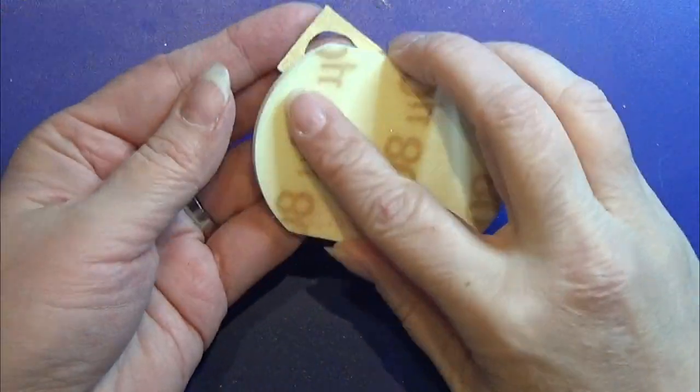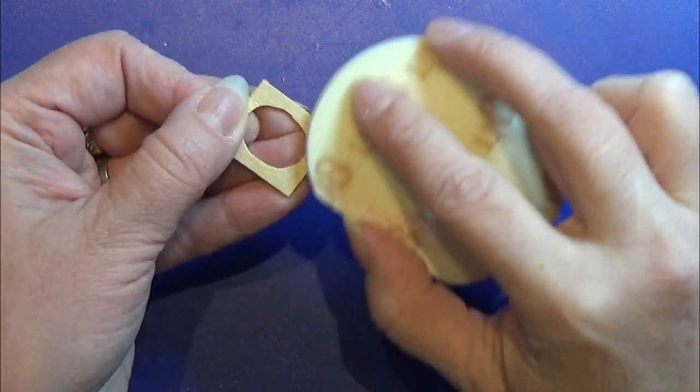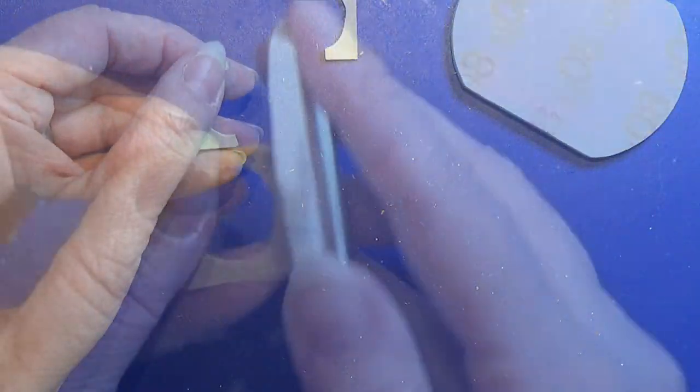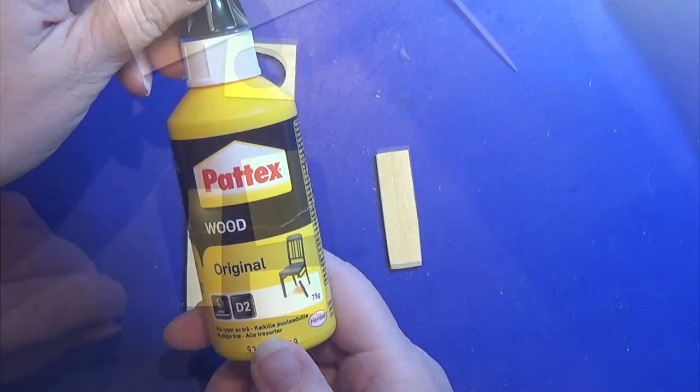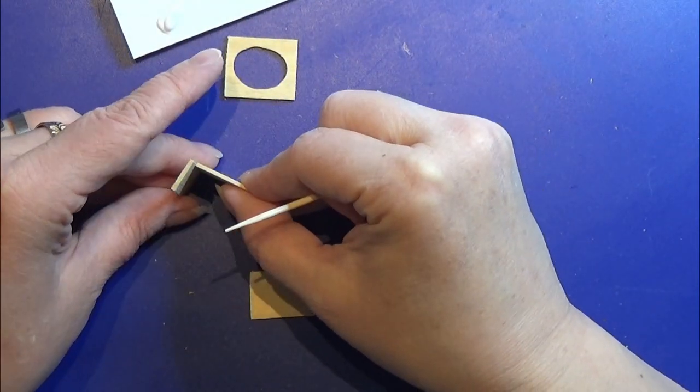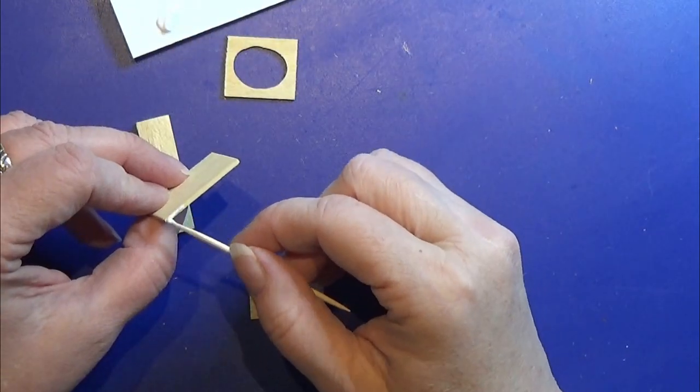I sand all the parts that I made to make them nice and smooth. Oops not good, I'm going to glue that together and this is the glue that I'm using for that. I glued the part together.